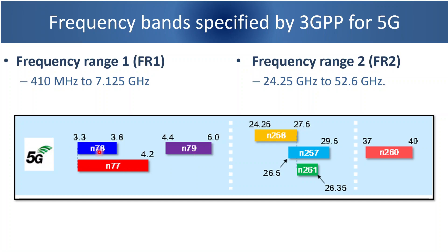Band N78 is gaining momentum and most 5G systems being deployed in the world are using the N78 band. FR2 frequencies are high band, ranging from 24.25 GHz to 52.6 GHz. In this range, four bands have been specified by 3GPP: N258, N257, N261, and N260.